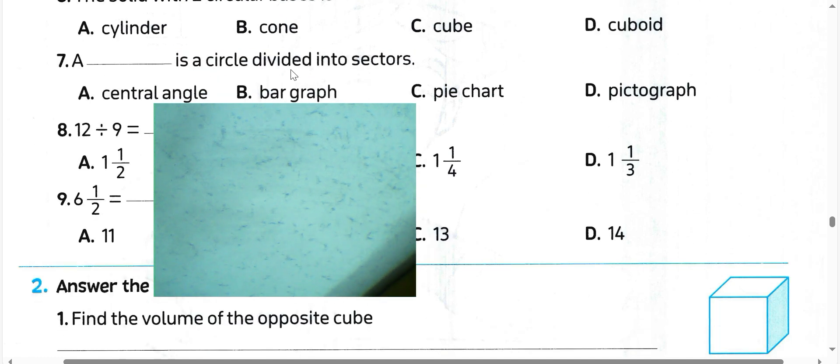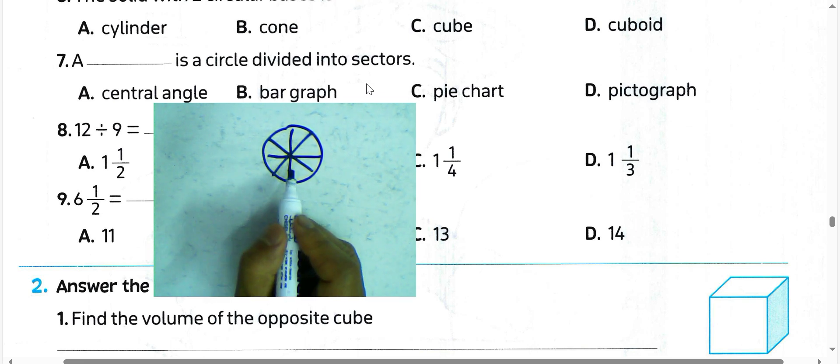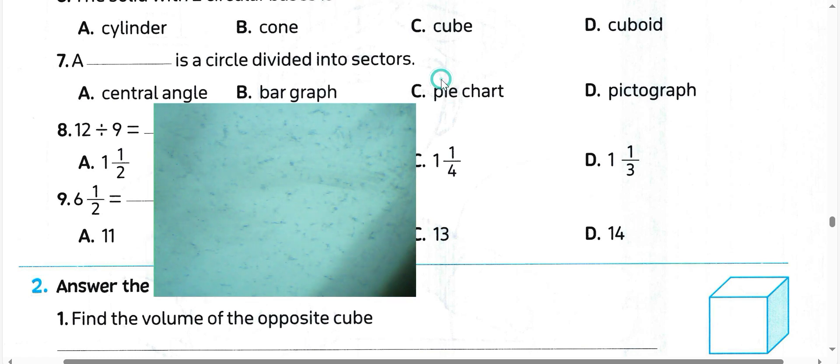A circle divided into sectors, we call it what? A pie chart. Choose letter C.